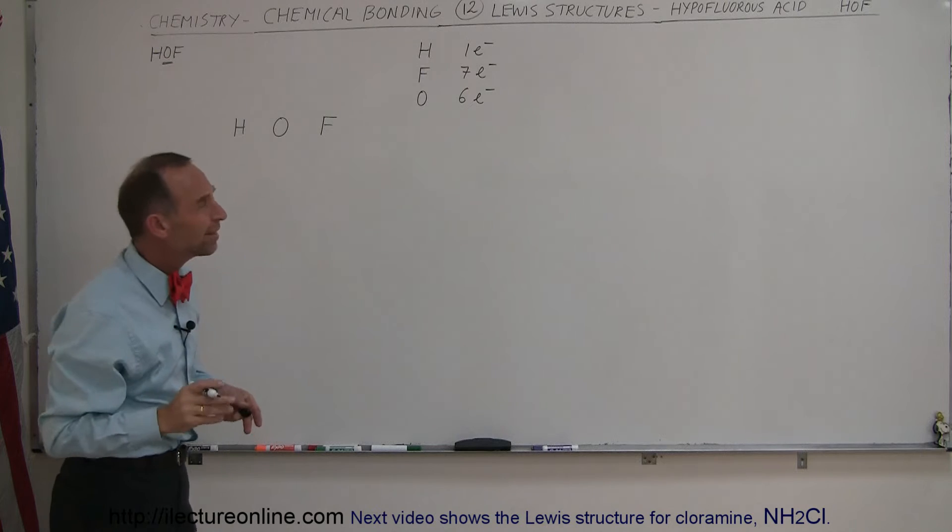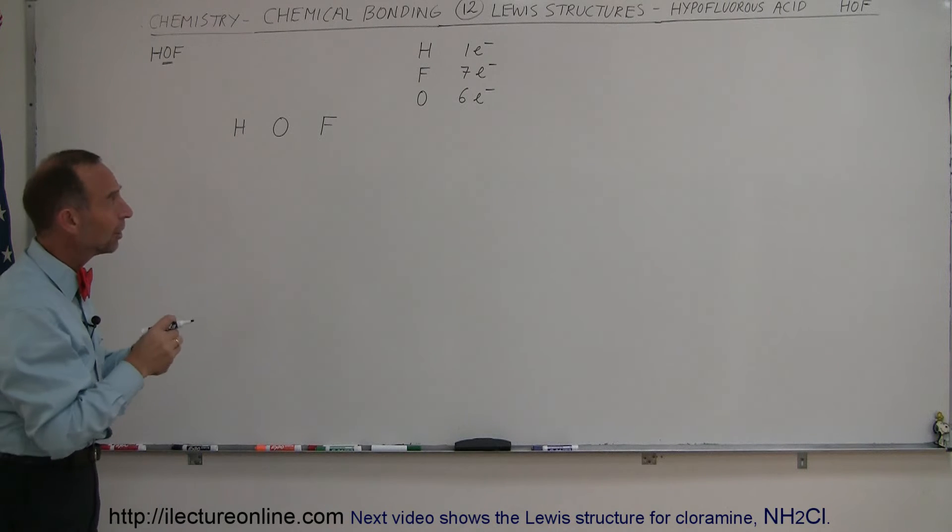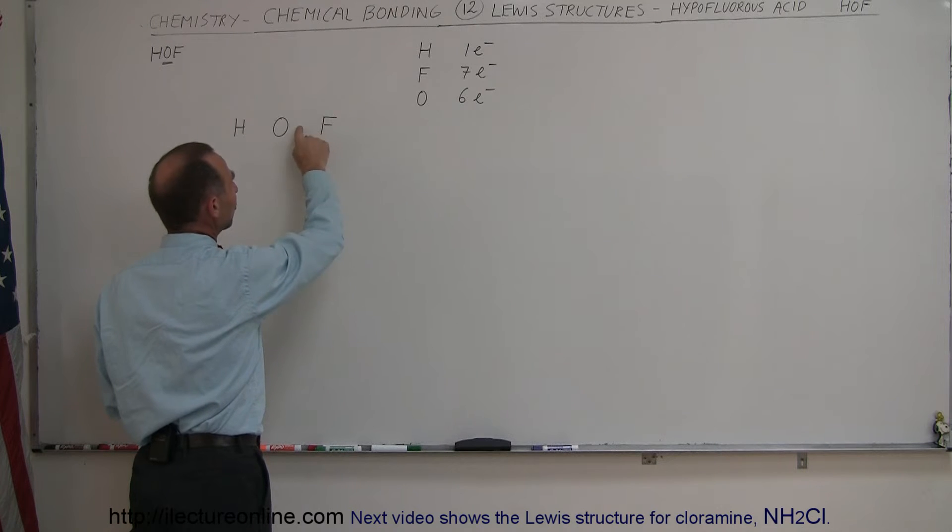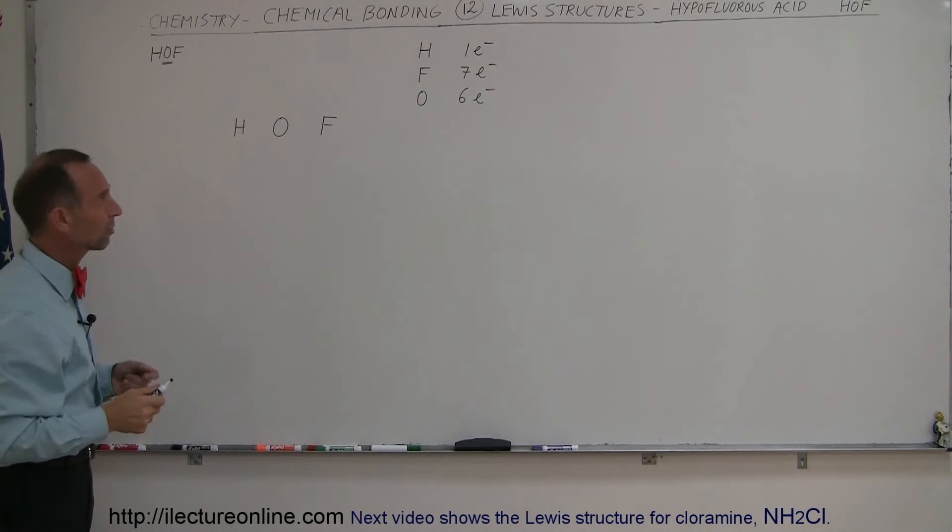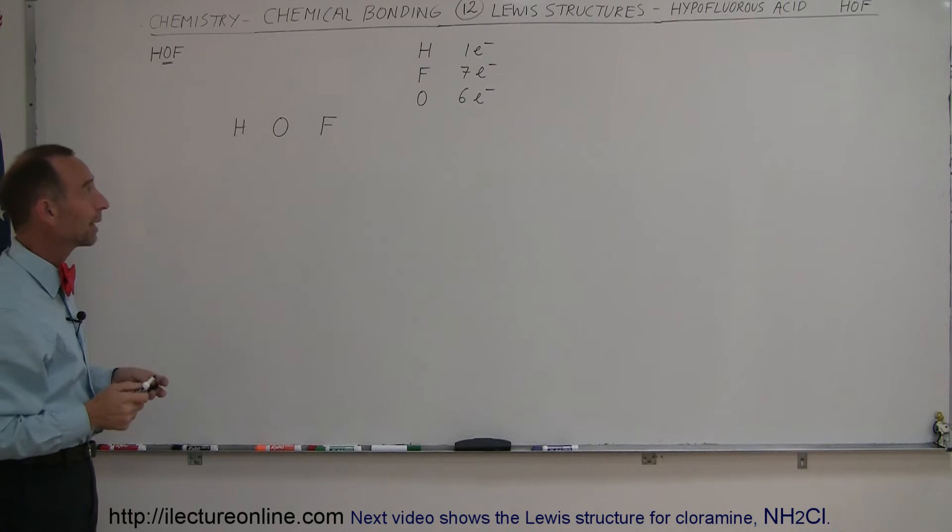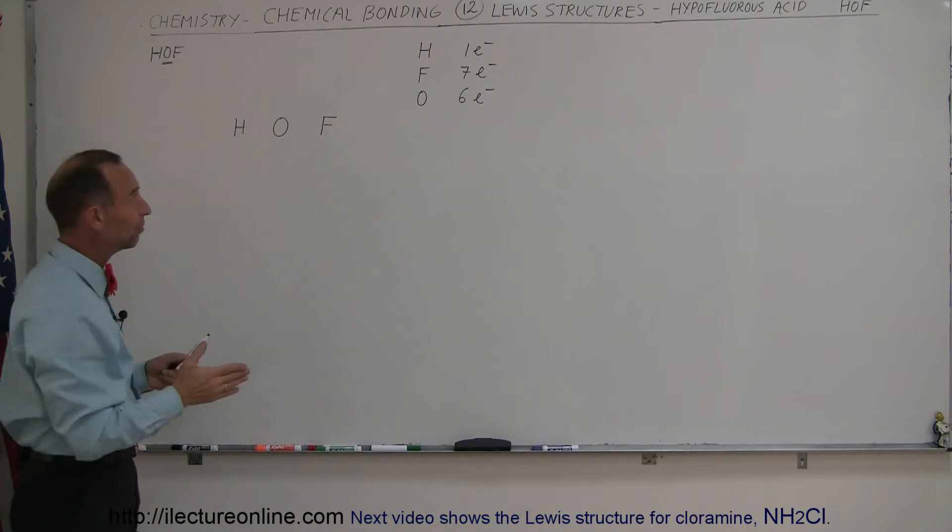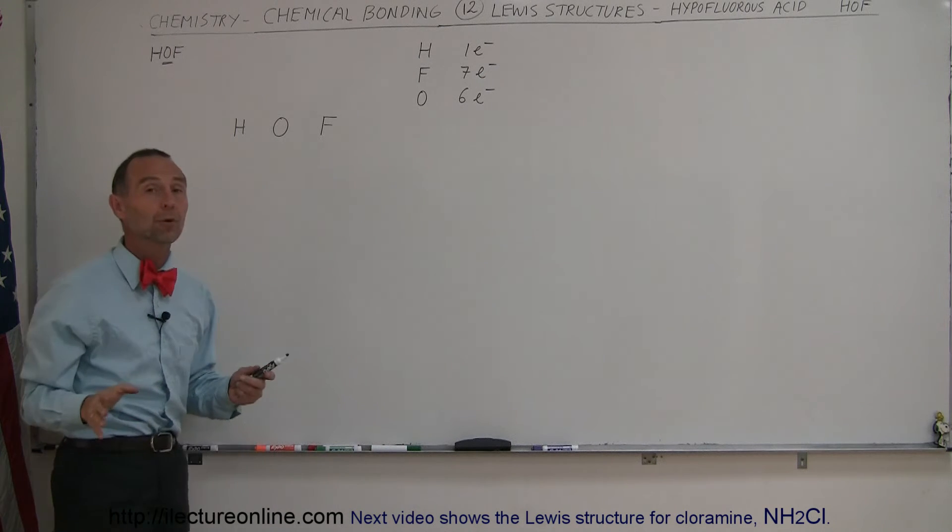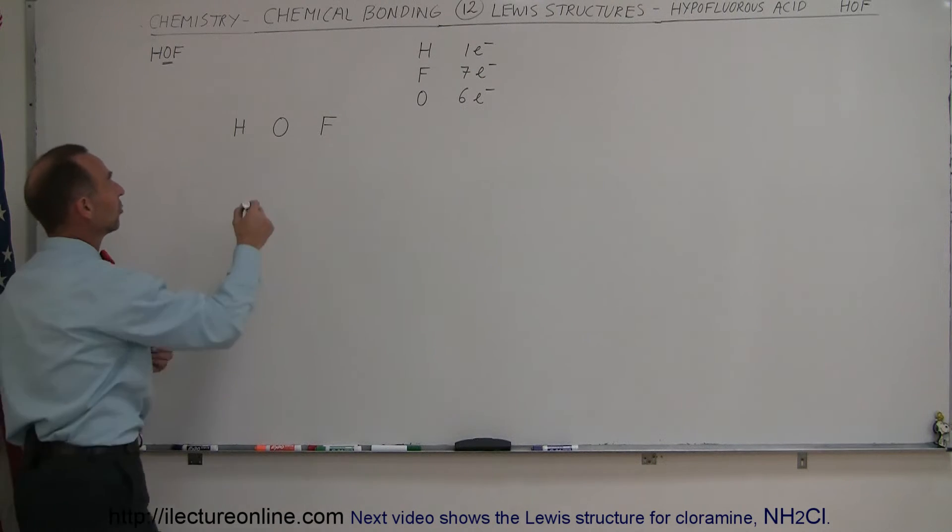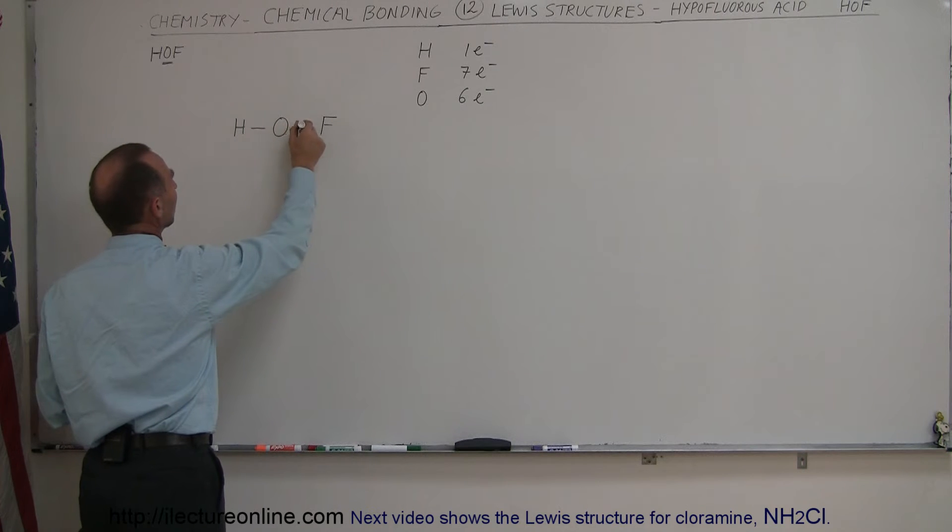Fluorine typically only makes a single bond to gain that one extra electron. So by placing the hydrogen on the other side, you would force fluorine to make two bonds, which wouldn't quite work out with its electron structure, so it's more likely it's going to be like this. Oxygen definitely looks like it wants to be in the center, because it wants to try and make two bonds to make up for the two missing electrons. So we probably expect something to look like this.